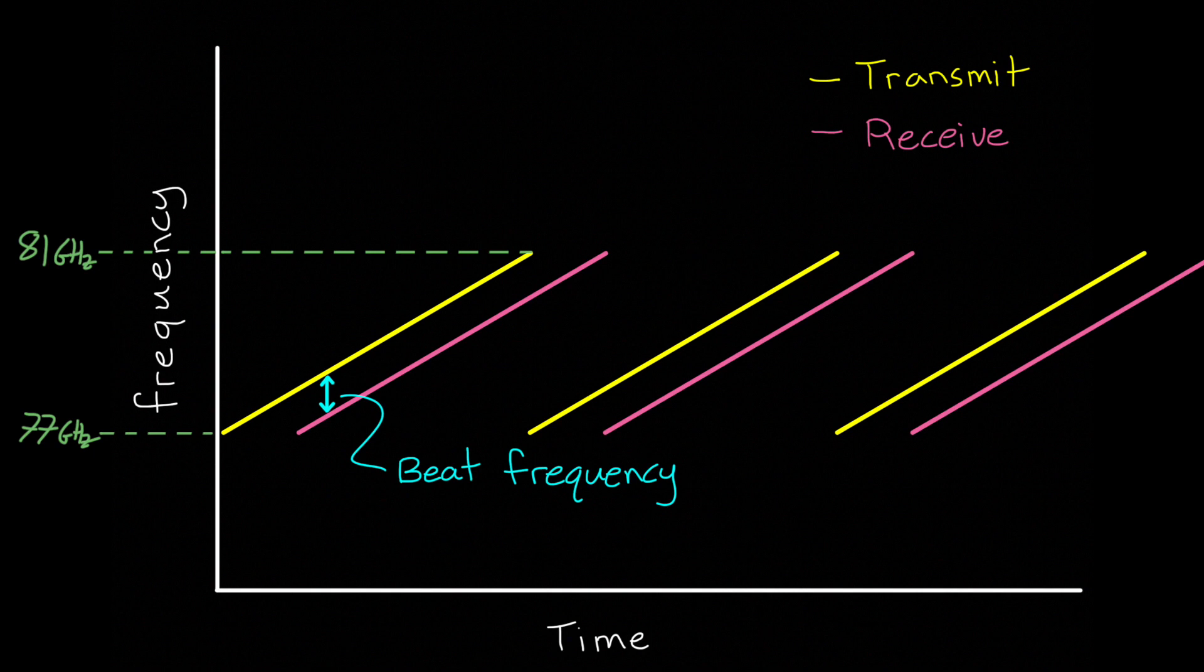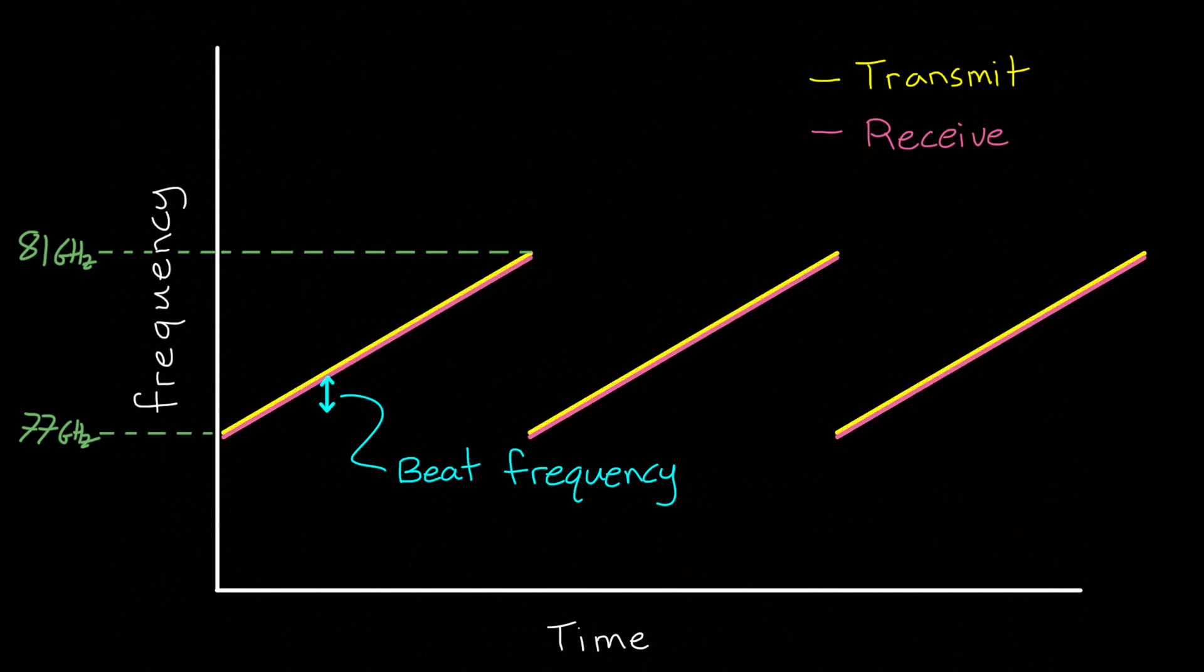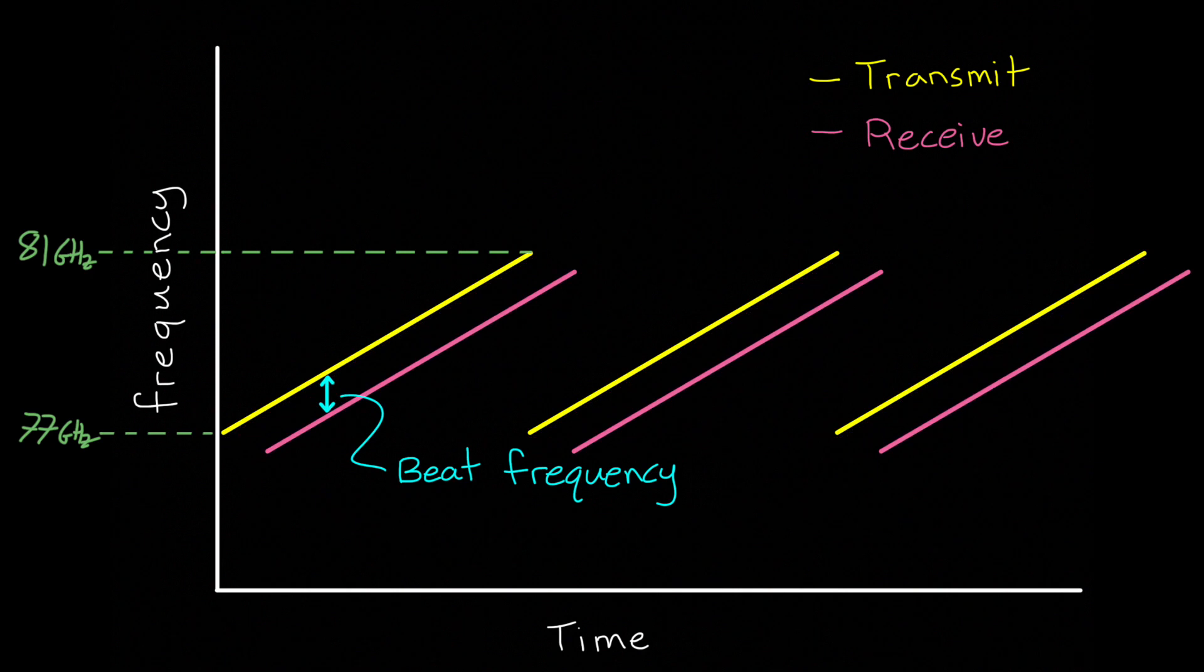Now, when the received signal is delayed in time, we do get two different frequencies at any given moment, and hence, a beat that can be measured. So, we are able to determine range in a very similar way as we do velocity, by mixing the transmit and receive signals and measuring the beat frequency. Unfortunately, with this setup, we have a slight problem. We can't determine whether this beat frequency is caused by a time shift or by a Doppler shift. And worse than that, we can't tell if there's a combination of Doppler and a time shift.